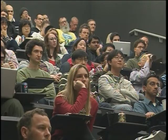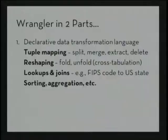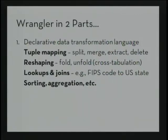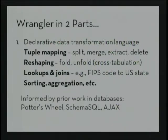Wrangler consists of two parts. Underlying the interface is a declarative data transformation language for various types of data manipulation including splitting, merging, extracting, deleting values within records, reshaping tables to form cross-tabulations, doing lookups based on types, and standard sorting and aggregation operators. We drew on past database research including systems such as Potter's Wheel, languages such as SchemaSQL, and systems like Ajax, using that as a starting point and iteratively designing our language along with the user interface.